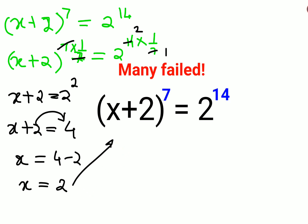Now let's verify. Substituting x=2, we get (2+2) raised to 7, which is 4 raised to 7. And 4 can be written as 2 raised to 2, the whole raised to 7.